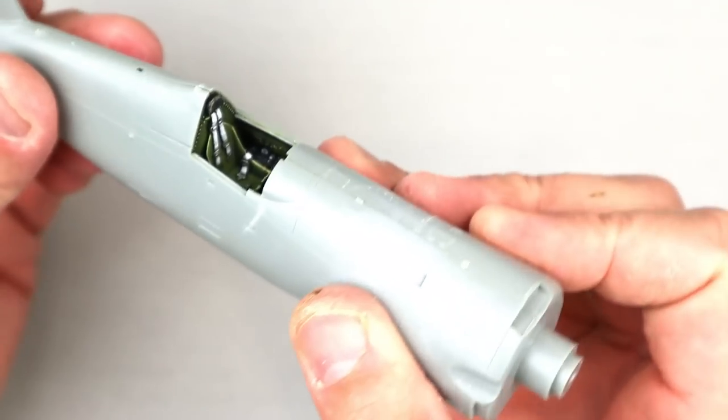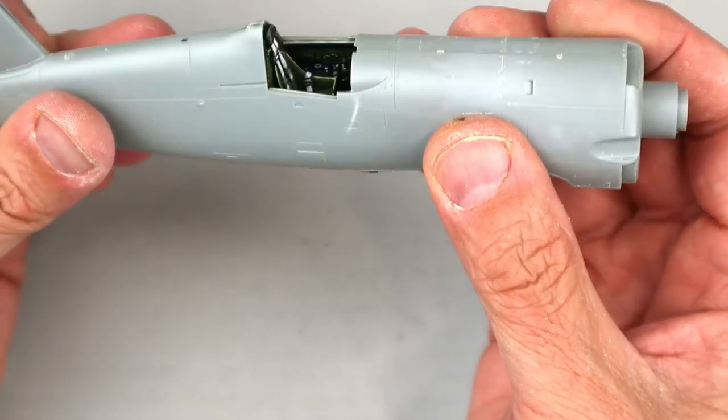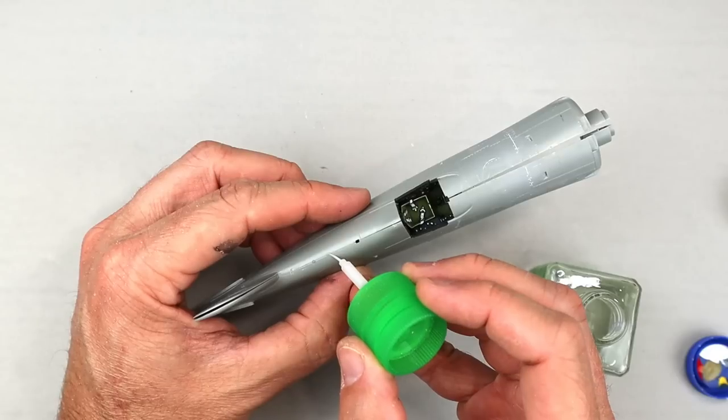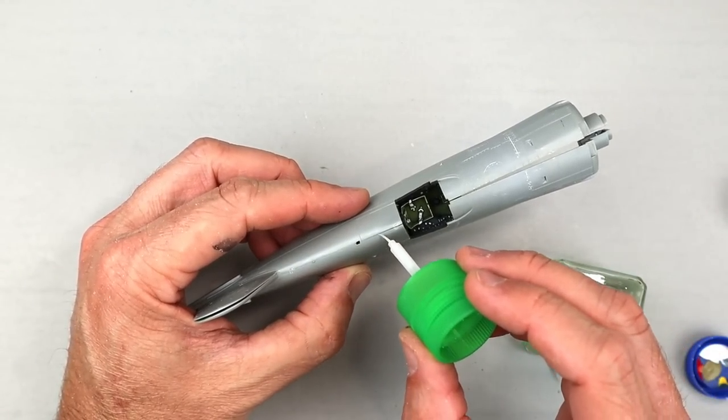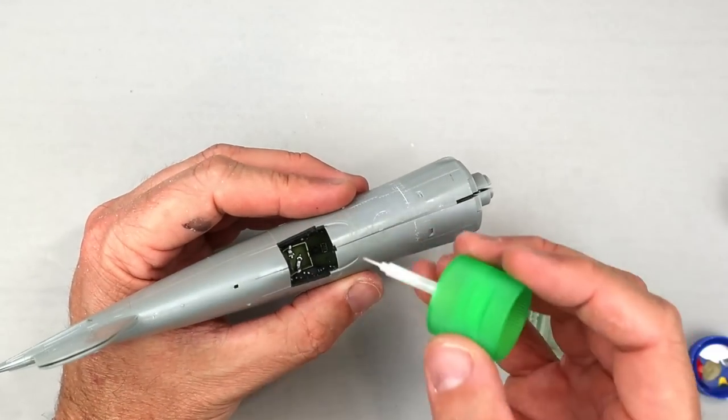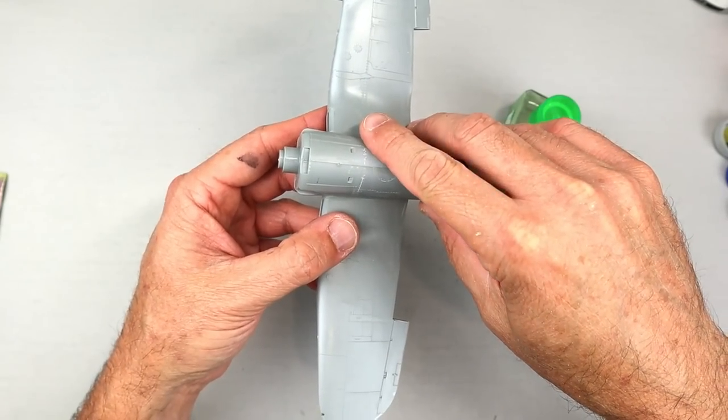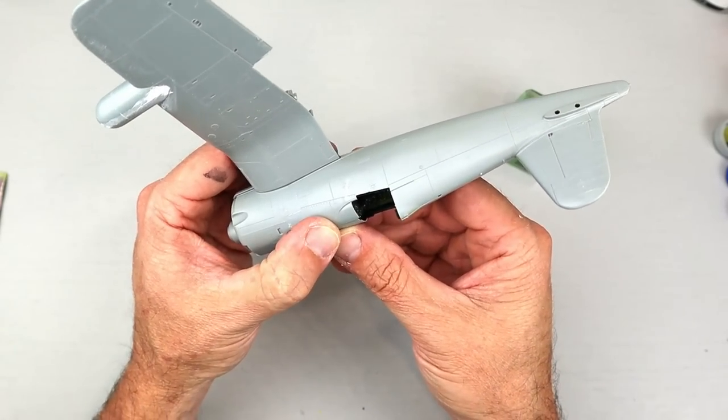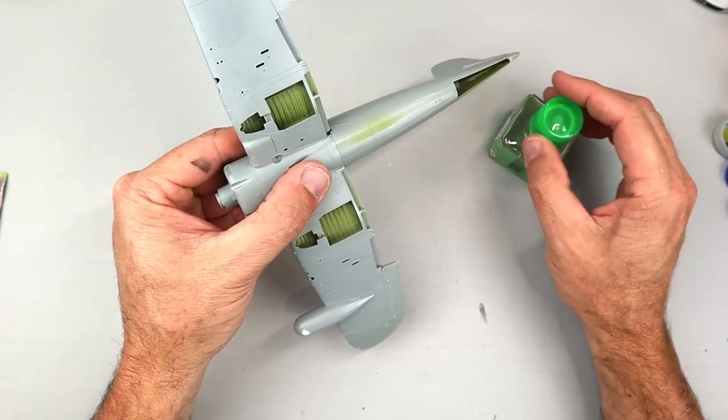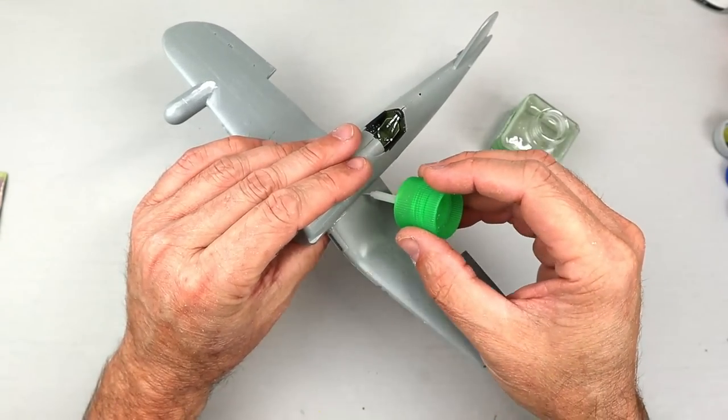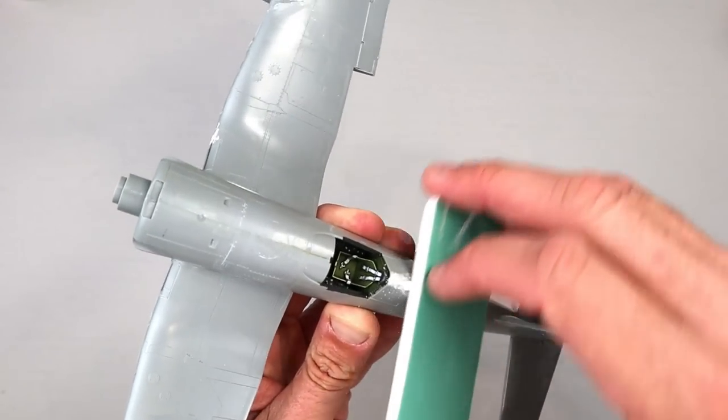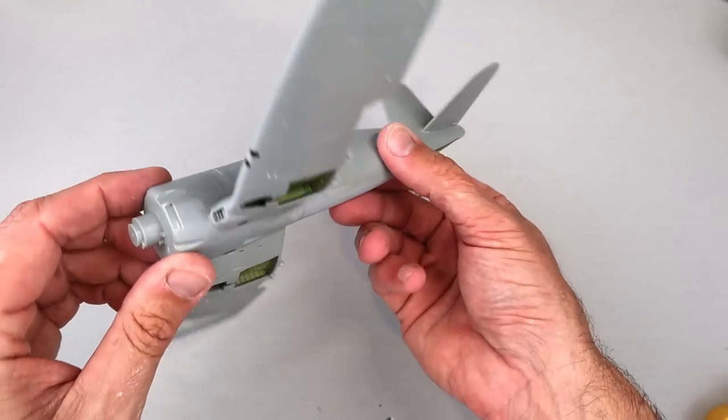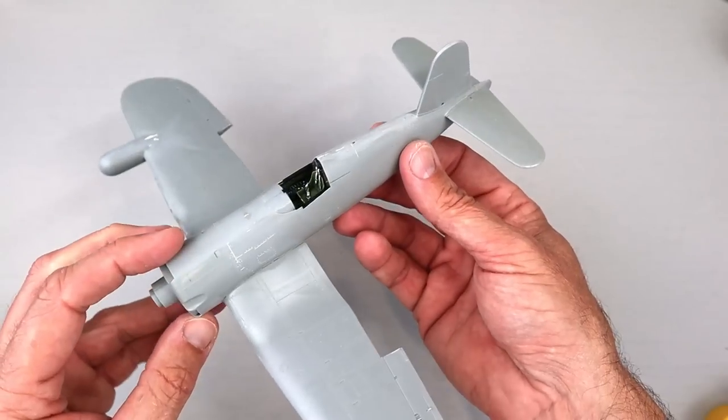With the cockpit tub installed on the left fuselage half I could check the overall fit of the tub into the fuselage by dry fitting the right and left fuselage halves together. The fit was really good so I used Tamiya superfine cement to glue them together. It's so thin it just runs into the smallest of gaps to bond the plastic pieces. Since I had already completed the wing assembly I could test fit the wing to the fuselage. Once again the fit was really good so I just used that Tamiya cement to install the wing to the fuselage. There were a few seams that needed a little filler so I used Tamiya superfine putty to fill them and once dry sanded them smooth.